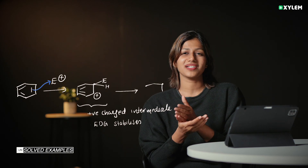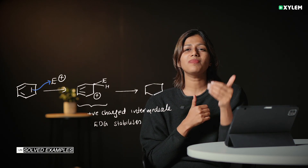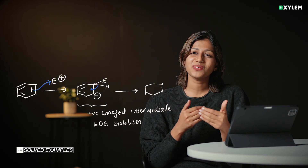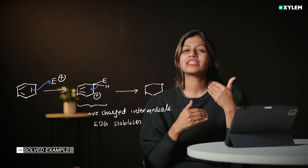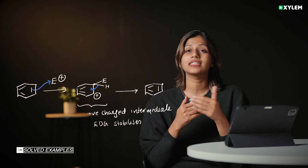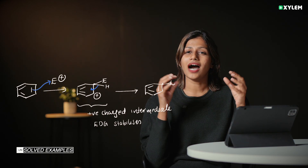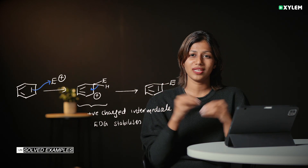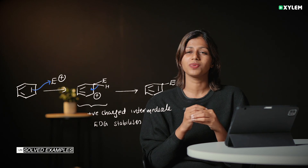A stable intermediate leads to a faster reaction path. That means the reactivity is the same as the stability of the intermediate, and that stability comes from the electron donating group.